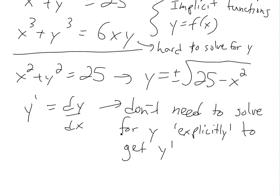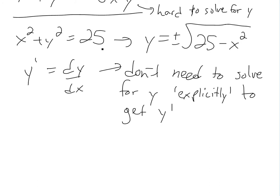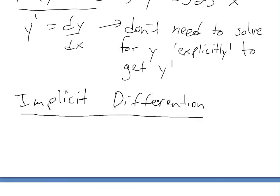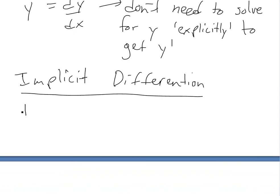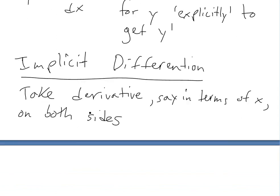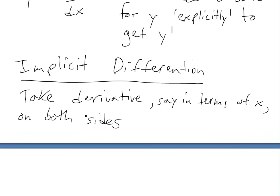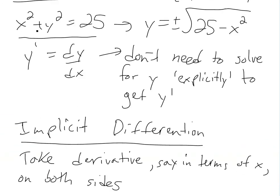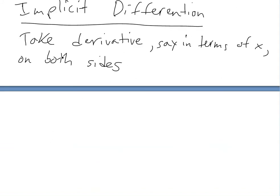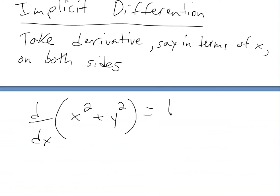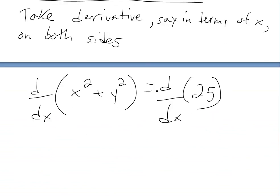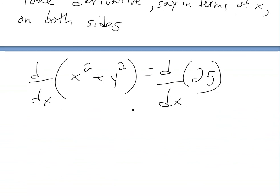This is what implicit differentiation is all about. If we want to get the derivative of this function, all we do is take the derivative on both sides — in terms of x, because x is independent and y is dependent on x. So if we have x squared plus y squared equals 25, we do d/dx of x squared plus y squared equals d/dx of 25. We can do this because both sides equal each other; we're just doing the same thing on both sides. This is the whole principle of implicit differentiation.